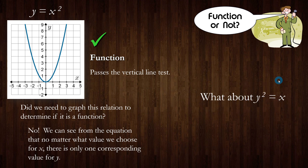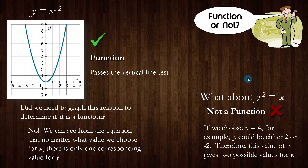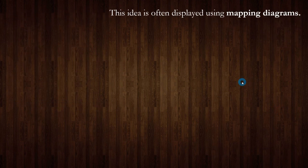Here's an interesting one: y squared equals x, where x is still our input and y is our output. Is this a function? It turns out it's not. If you choose an x value of 4, y could be 2 because 2 squared is 4, but y could also be negative 2 because negative 2 squared is also 4. So for the input 4 we have two possible output values — 2 and negative 2 — which means it's not a function.